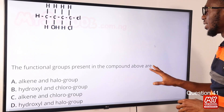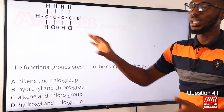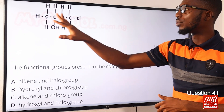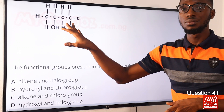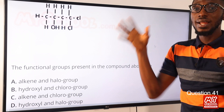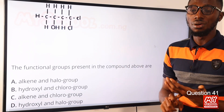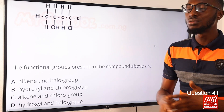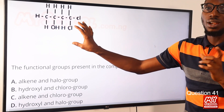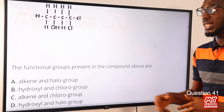Question 41. The functional groups present in the compound above are the hydroxy group and the halo group. The halo group refers to halogen atoms attached to a carbon chain. For naming, the halogens are identified as chloro for chlorine, bromo for bromine, iodo for iodine, and so on. The functional groups here are the hydroxy group and the halogen group. We can find them in option D. Option D is the correct option.